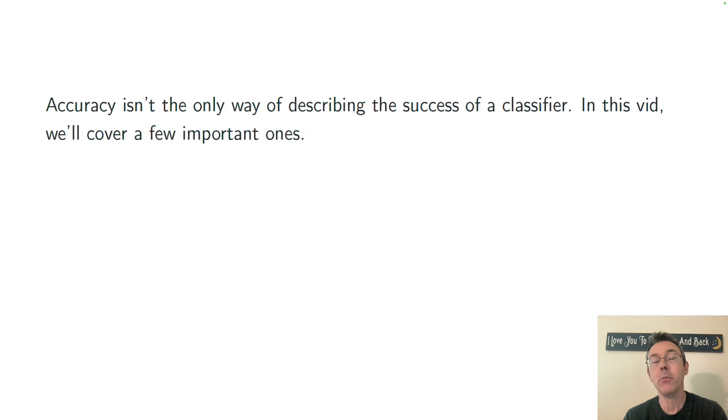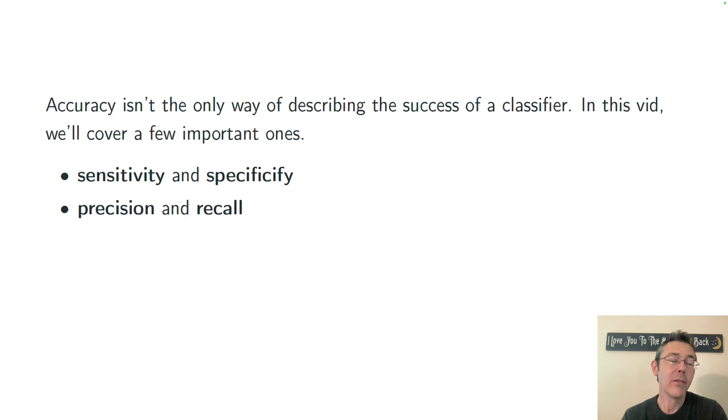Of course, accuracy is not the only numerical way of describing the success of a classifier. And in this video, we're going to cover a few important ones and nod my head in the direction of a few others. We can talk about sensitivity and specificity, both of which are thinking, generally speaking, about the false positive and false negative rates. Or we can think about precision and recall, both of which are trying to give context for the true positives in the data set.